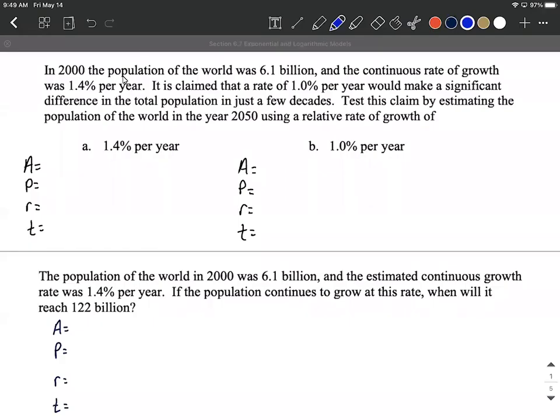Modeling exponential growth. So jumping right into this problem, in 2000 the population of the world was 6.1 billion. I'm going to try to identify the numbers as we go through this and any keywords. The continuous, big keyword there pointing us towards the right formula, continuous rate of growth was 1.4 percent per year. It is claimed that a rate of 1.0 percent per year would make a significant difference in the total population in just a few decades.